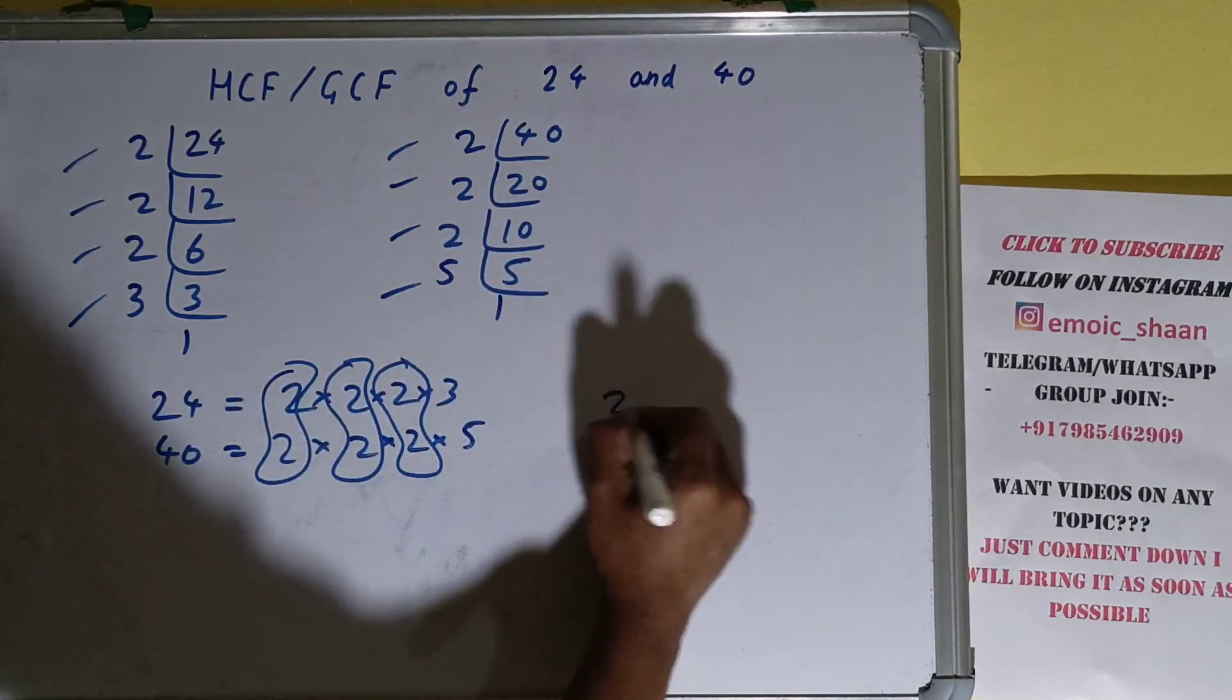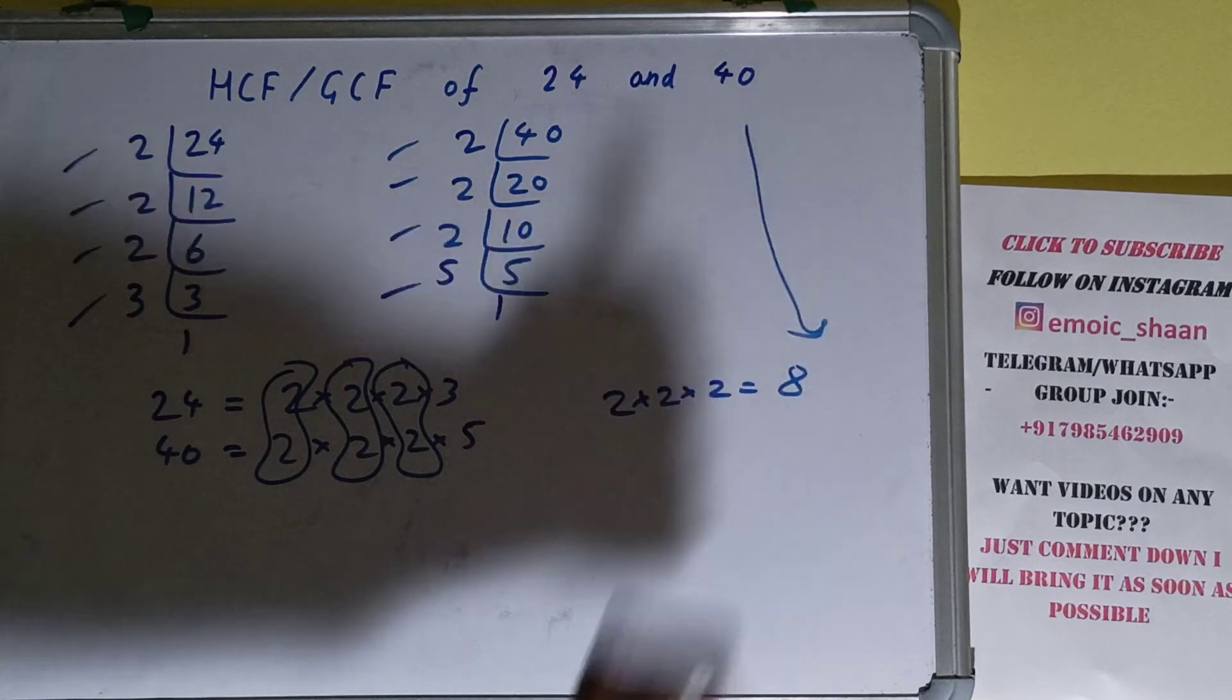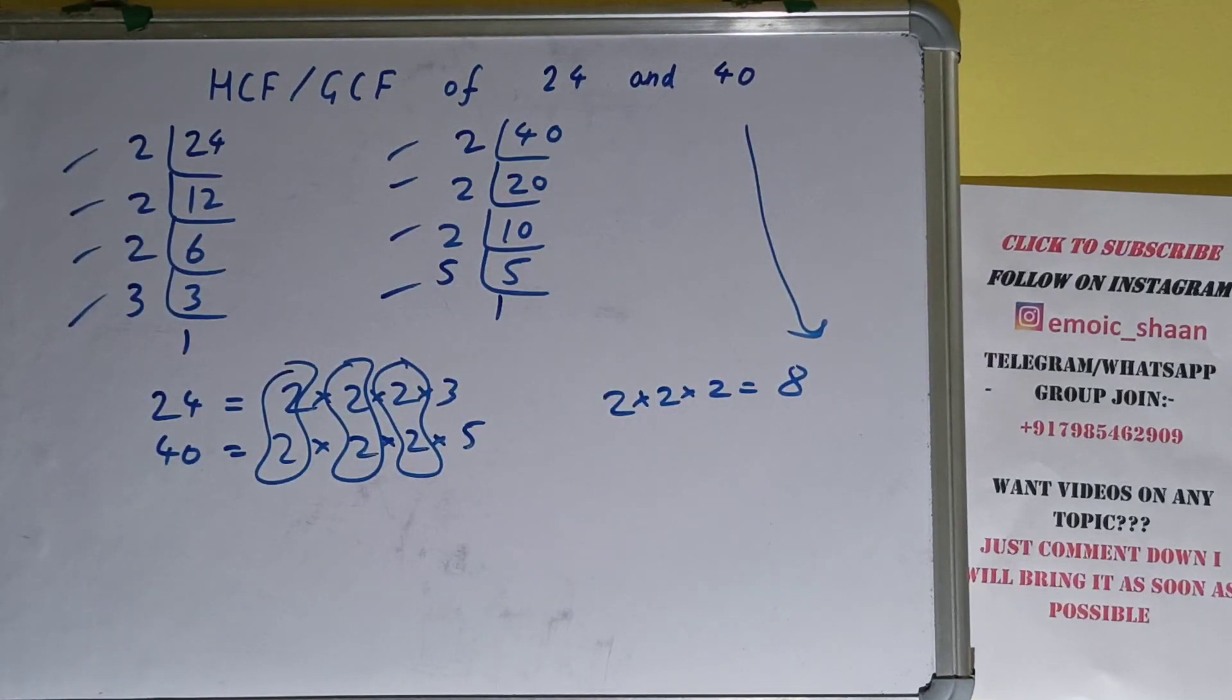So the answer will be 2 times 2 times 2, that is 8. We can say that the HCF or the GCF of the numbers 24 and 40 is 8. So this is all. If you found the video helpful, please hit the like button, do consider subscribing, and thanks for watching.